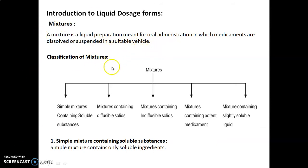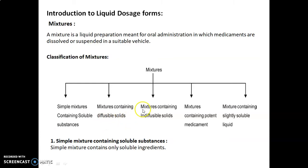Classification of mixtures: mixtures are classified into the following 5 types — simple mixture containing soluble substances, mixtures containing diffusible solids, mixtures containing indiffusible solids, mixtures containing potent medicament, and mixtures containing slightly soluble liquid.